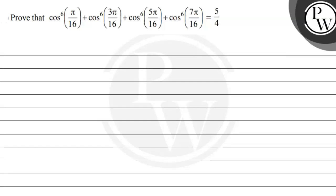Hello, let's see this question. The question says: prove that cos to the power 6 of π/16 plus cos to the power 6 of 3π/16 plus cos to the power 6 of 5π/16 plus cos to the power 6 of 7π/16 is equal to 5/4.